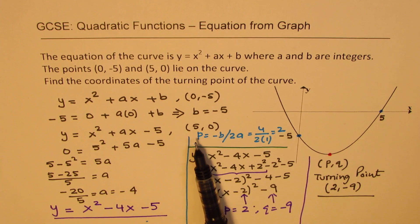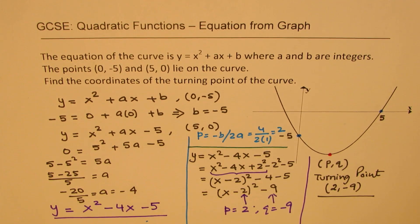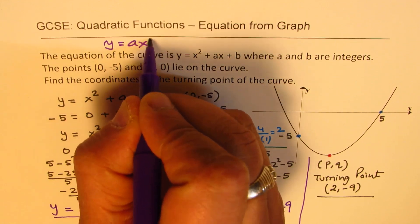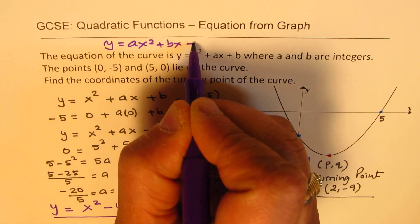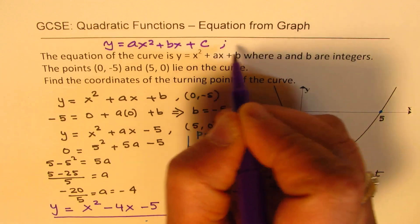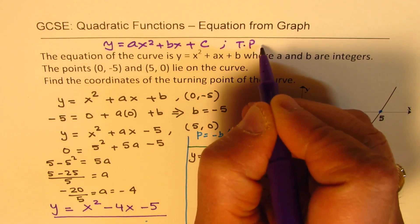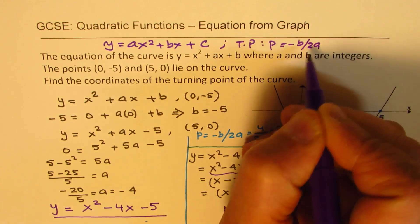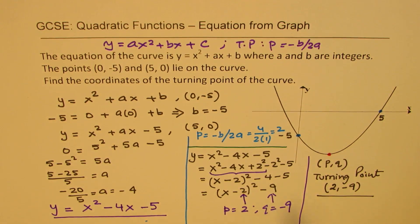See, we had got that minus b by 2a. Let me explain this. In general, the equation of a parabola is y equals ax squared plus bx plus c. So in this case, the turning point for us, p, will be equal to minus b by 2a. So the x value of the turning point, which we use the formula here to find.